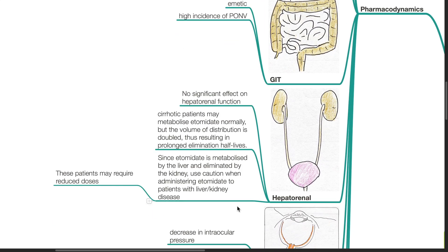Regarding the hepatorenal system, etomidate does not cause significant effect on hepatorenal function. Cirrhotic patients may metabolize etomidate normally but the volume of distribution is doubled in some studies, thus resulting in prolonged elimination half-lives. Since etomidate is metabolized by the liver and eliminated by the kidney, use caution when administering etomidate in patients with liver and kidney disease. Etomidate causes decrease in intraocular pressure and these patients may require reduced doses.